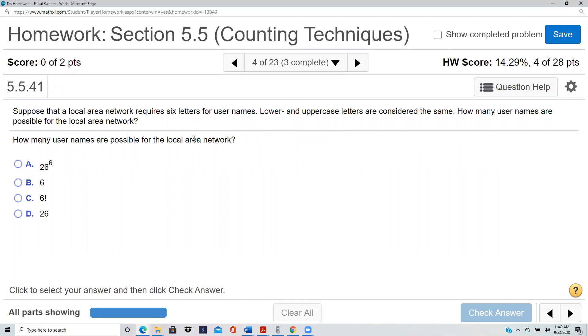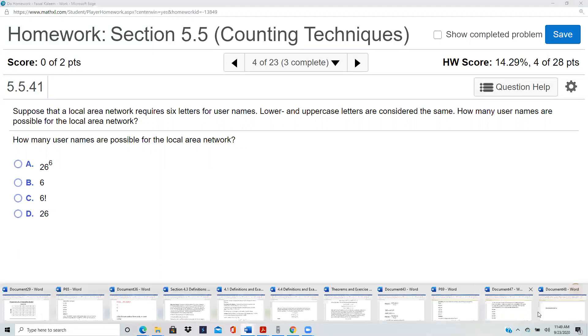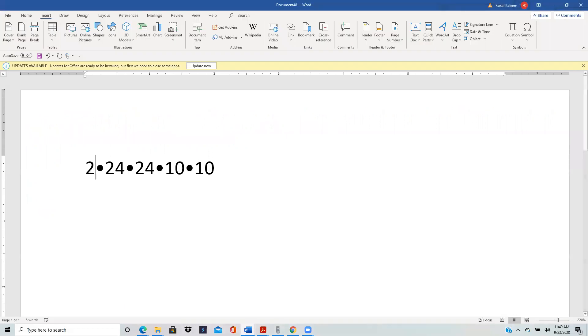Suppose a local area network requires six letters for user names. Lower and uppercase are considered the same. How many user names are possible? Okay, so you have six letters. So every spot has 26 choices. So if you go back here, it's like 26 for the first spot, 26 for the second spot, 26 for the third spot, 26 for the fourth spot, 26 for the fifth spot, and then there are six of them, so you have another one, 26.